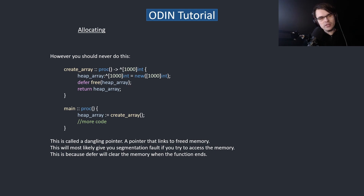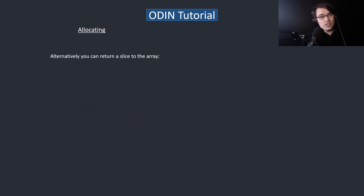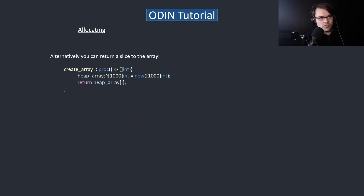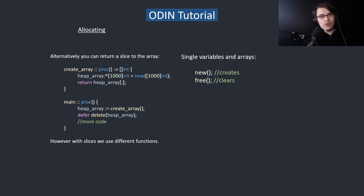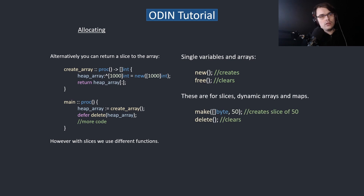A segmentation fault is when you access memory outside the program that you shouldn't. Alternatively you can return a slice to the array — a slice is basically a pointer with a length. However, with slices we use different functions. For single variables and arrays we use `new` and `free`. For slices, dynamic arrays, and maps we use `make` and `delete` — it's just a different keyword. So if you make a slice you have to use `delete` and not `free`.